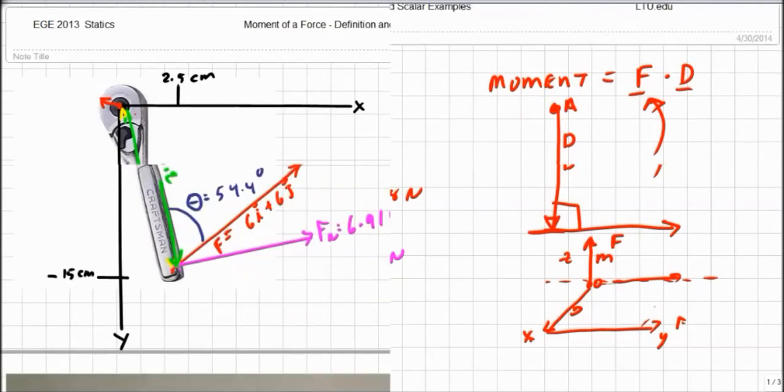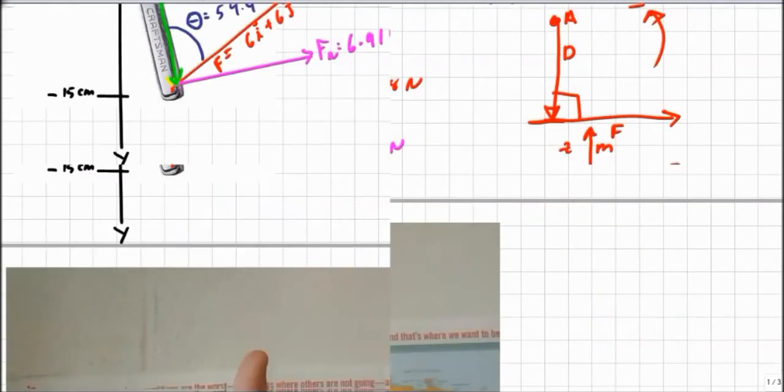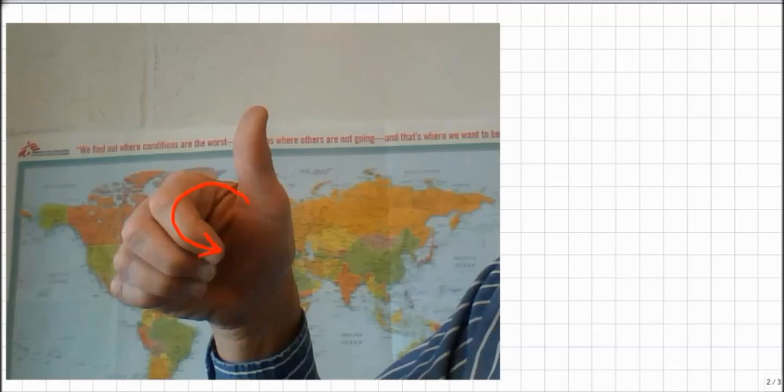One is the right-hand rule. Take your right hand, curl your fingers in the direction of the rotation or the direction of the moment, and your thumb points in the positive direction. So if we were counterclockwise, my right-hand thumb is pointing up. Counterclockwise, my thumb ends up pointing down or in the negative direction. Positive is up, negative is down. It's a better way to say it than your thumb points in the positive direction.